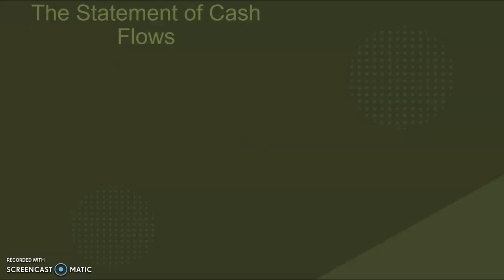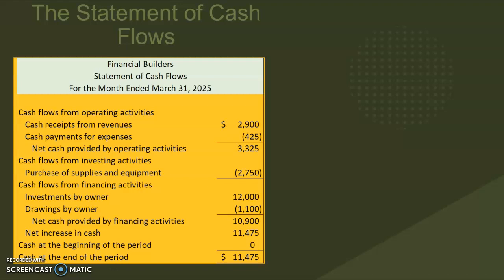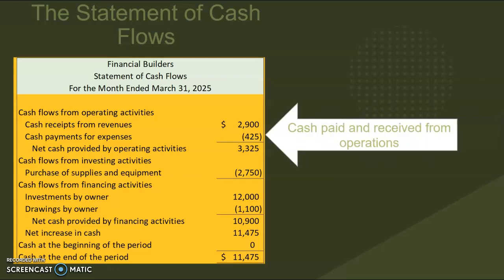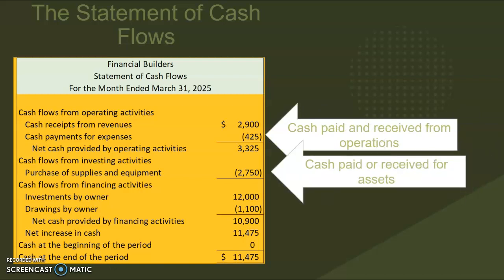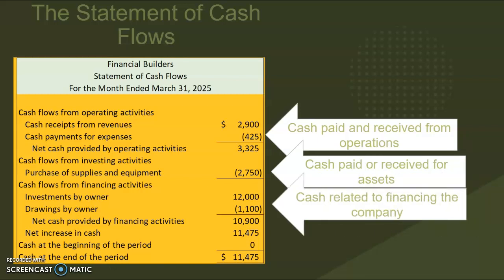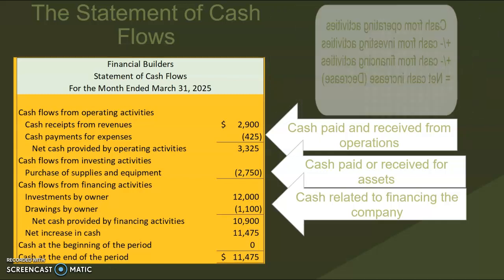Our last statement is the statement of cash flows. This one is a little different because it focuses just on the cash transactions during the period. It has three sections: cash from operations, which is cash received and paid for running the business; cash from investing activities, which relates to cash paid or received for some of those assets; and cash from financing activities, such as investment by the owners or amounts paid out such as drawings.